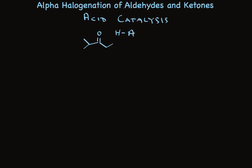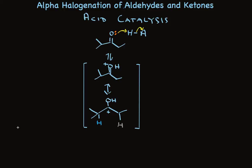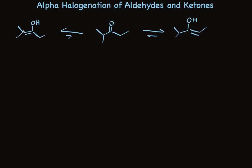Recall that proton acids readily protonate the carbonyl oxygen. That's a reversible process — a rapid equilibrium — putting the positive charge on oxygen. In a second resonance structure, the positive charge can also be on carbon. We can picture the formation of enol from this by loss of an alpha hydrogen at either of the two alpha positions, or loss of hydrogen from the less substituted carbon. It is the formation of these two different enols that accounts for the two different regiochemistries of halogenation.